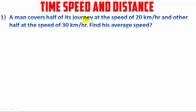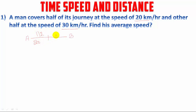The first question is: a man covers half of his journey at the speed of 20 km per hour and the other half at the speed of 30 km per hour, and we have to find the average speed. A man covers a certain distance — he goes from A to B — covering half at 20 km/h and the other half at 30 km/h. To find the average speed, there is a formula.